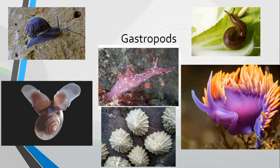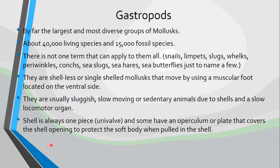So let's talk a little bit more about the gastropods. By far, gastropods are the largest and most diverse group of mollusks. There are about 40,000 living species and about 15,000 fossil species. There is not one term that can apply to them all. Here's a large list of some of the common names of gastropods: snails, limpets, slugs, whelks, periwinkles, conchs, sea slugs, sea hares, sea butterflies, just to name a few. So there are a lot of different kinds of gastropods in that group — 40,000.